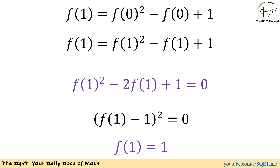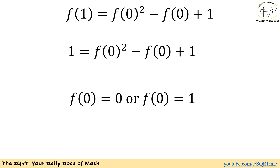With that, it's now easy to find f of 0. We are going to use 1 for f of 1, and the unknown variable is f of 0. If we simplify, it means that f of 0 is going to be 0 or 1.